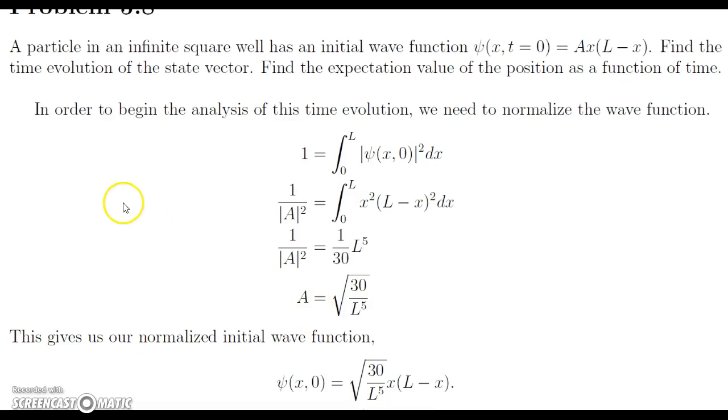So to start off, we want to normalize this. And to do that, we're going to solve for the value of A that makes this state normalized. We set 1 equal to the integral from 0 to L of this initial wave function modulus squared. When we do that, it's just the power rule backwards. When we square, we multiply through and integrate. We have 1 over |A|². Since an overall phase does not affect the physicality of the system, has no physical meaning, we can choose A to be real and positive. Therefore, we have A equal to √(30/L⁵). That gives us our normalized initial wave function, which is ψ(x,0) equal to √(30/L⁵) times x times the quantity (L minus x).